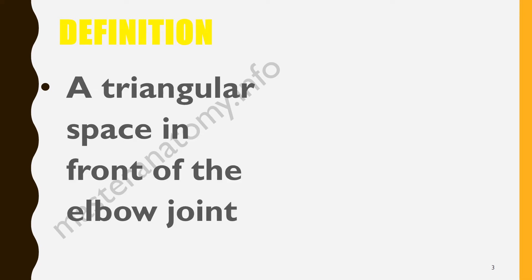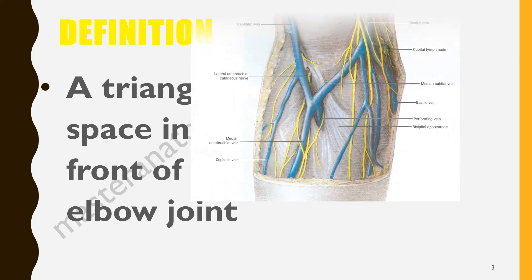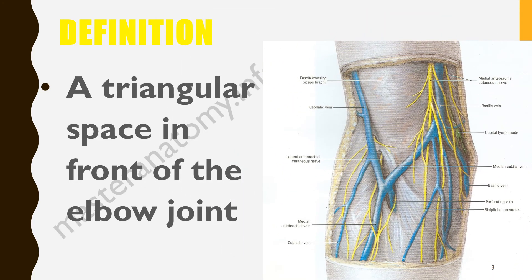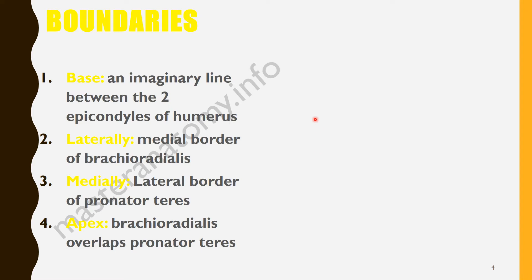So where is the cubital fossa located? The cubital fossa is a triangular depression found in front of your elbow. It has boundaries just like a triangle would have.